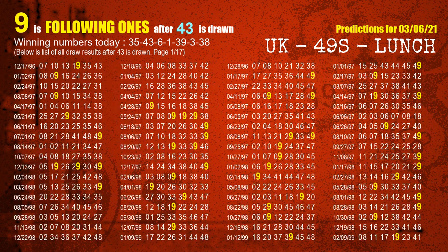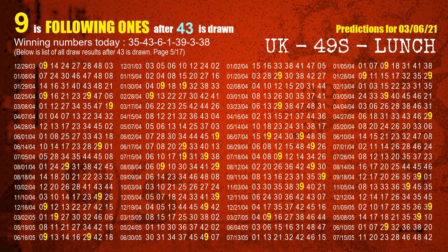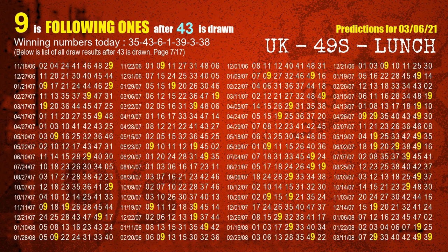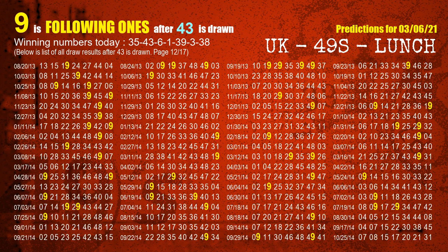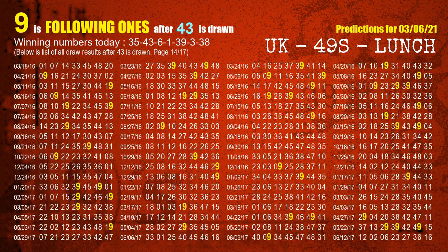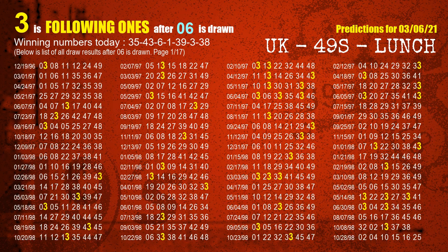The second winning number is 43. The most frequently following units digit is 9 when 43 is the winning number in the last draw. The third winning number is 06. The most frequently following units digit is 3 when 06 is the winning number in the last draw.